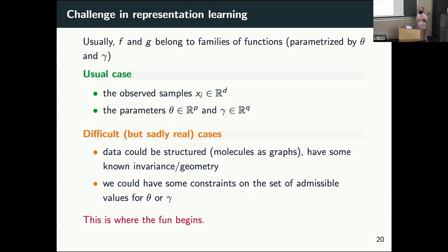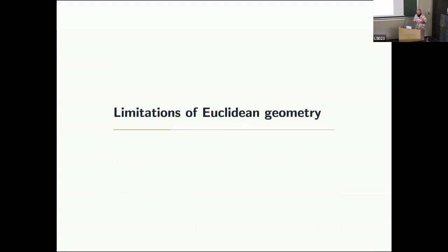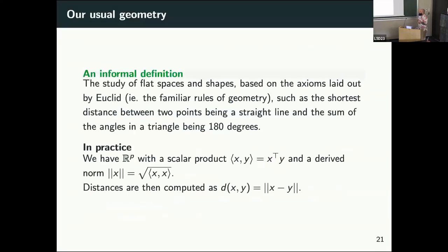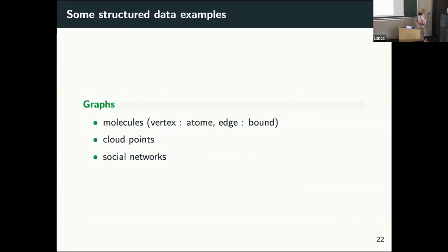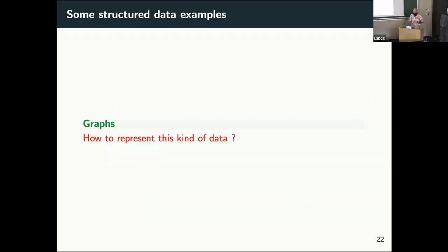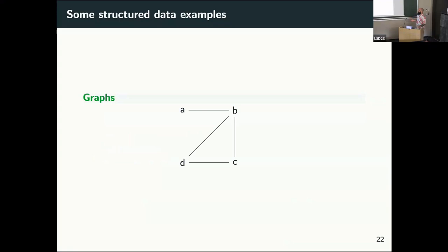This is where the fun begins. We can have data that is structured — for example, if we have molecules encoded as graphs, we can't just use regular Euclidean geometry anymore. We have to account for the fact that the data have some kind of invariance or geometry we have to use. And sometimes the set of admissible values for gamma or theta is not the whole space — we have some constraints we also have to enforce. For example, graphs can model molecules, social networks, and many things — and Euclidean geometry doesn't work.